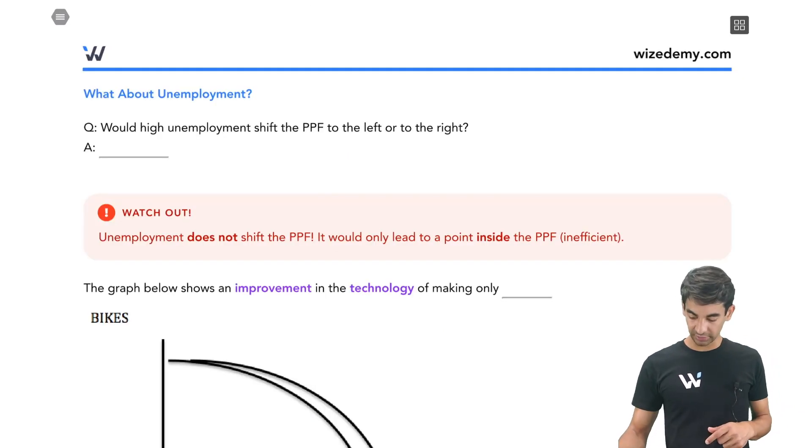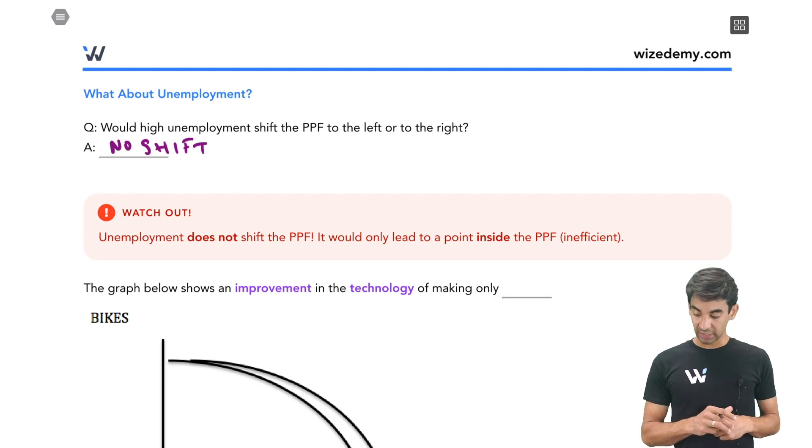So we can fill out here, there would be no shift. Watch out. Unemployment does not shift the PPF. It would only lead to a point inside the PPF, an inefficient point, but no shift, which is exactly what we just said.